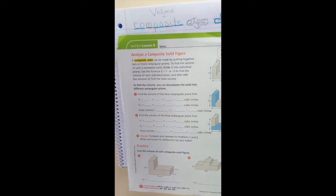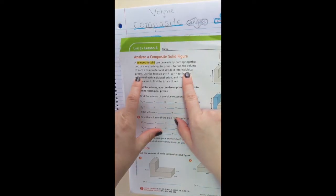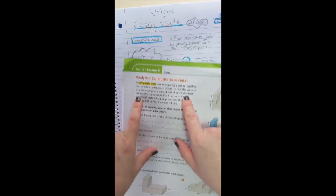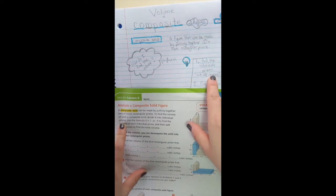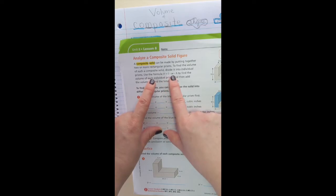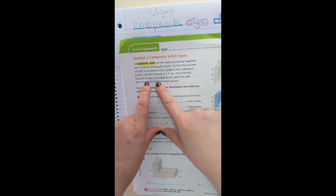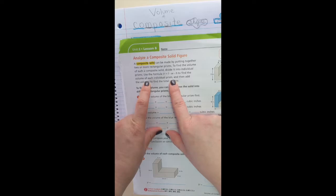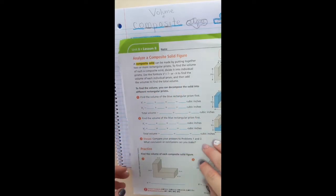To find the volume of such a composite solid, divide it into individual prisms. So that was our step one. Find individual prisms and cut off chunks. That's our step one. Then it says use the formula volume equals length times width times height to find the volume of each individual prism. And then add the volumes to find the total volume.